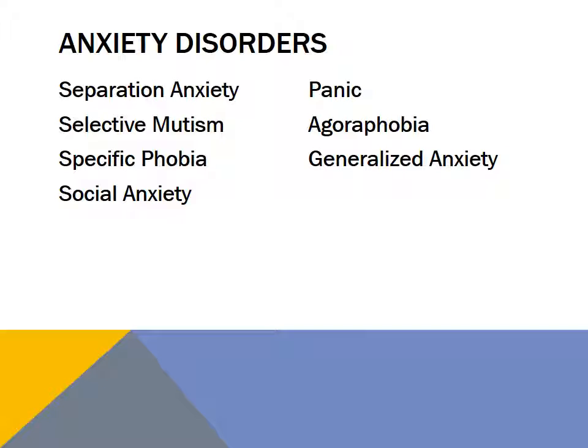There is a persistent fear or anxiety about harm coming to attachment figures and events that lead to loss or separation from attachment figures, and a reluctance to go away from attachment figures, as well as nightmares and physical symptoms. Although the symptoms often develop in childhood, they can be expressed throughout adulthood as well.